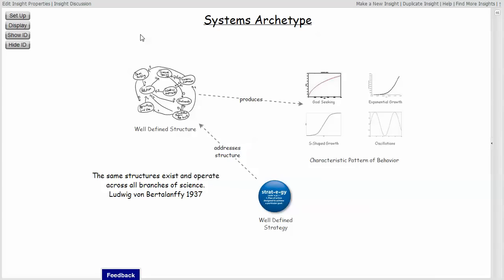So why shouldn't there be a consistent set of structures operating throughout that universe? What Bertalanffy was talking about are what are now referred to as the systems archetypes, though I don't believe they were called systems archetypes until Senge came along with The Fifth Discipline in 1990.